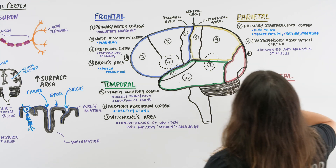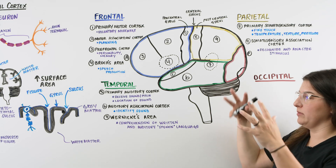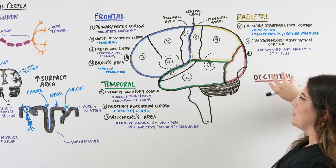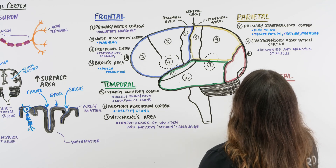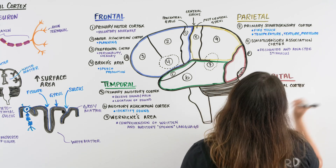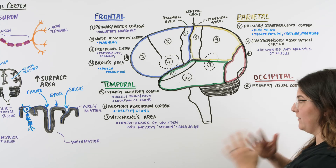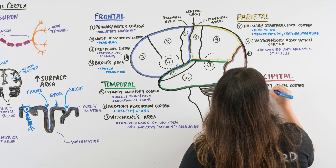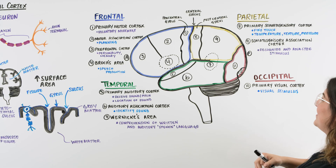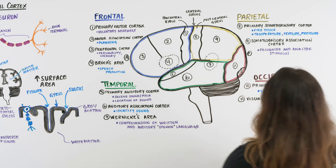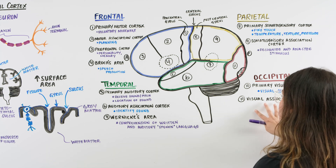Our last lobe is our occipital, where we're going to have all of our visual processing. We have two areas here. The first is our primary visual cortex, whose job is to bring in all of that visual information — what we're going to be able to see — but it's not going to identify it yet. The area that takes care of identification is our visual association cortex, which helps us identify what we're seeing — shapes, colors, or whether we're seeing someone's face we've seen before.